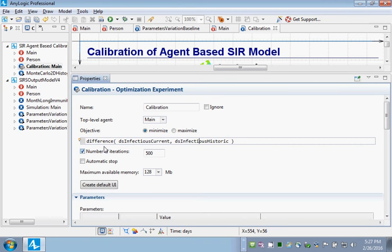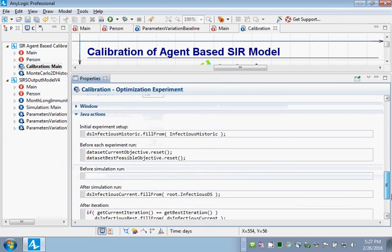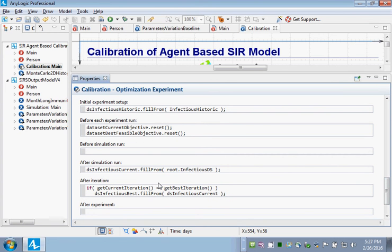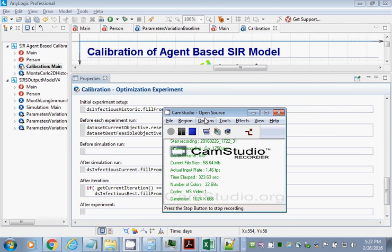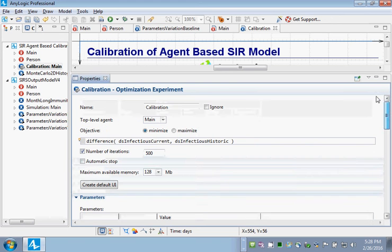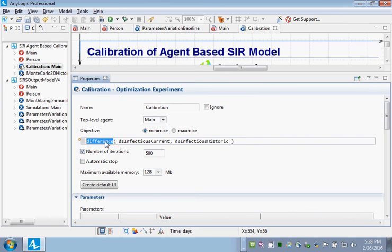And if we scroll down in the calibration, you will find that just as in parameter variation, you fill in these elements here. And just as in parameter variation, you read data out of that main class with this root. You read data out, you fill up some data sets in here, and you basically try to match those data sets you read out from the model, DS current, with the historic data. So you're sucking data out of the model after it runs from its emergent behavior, and you're comparing that with the historic data. And you're trying to minimize that discrepancy running the model again and again and again. So that's the basics of calibration in AnyLogic.